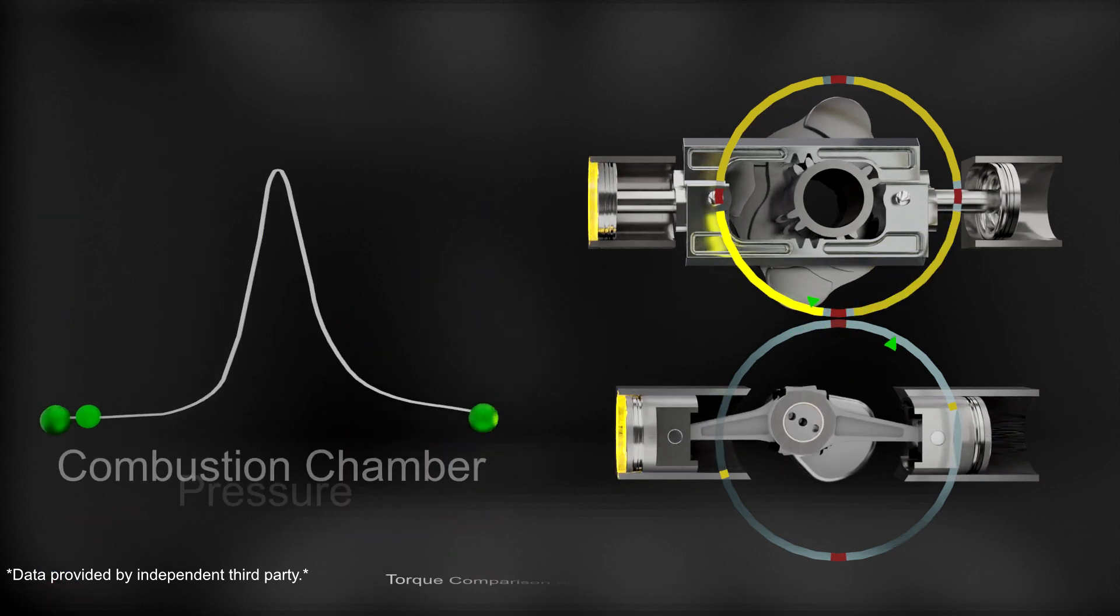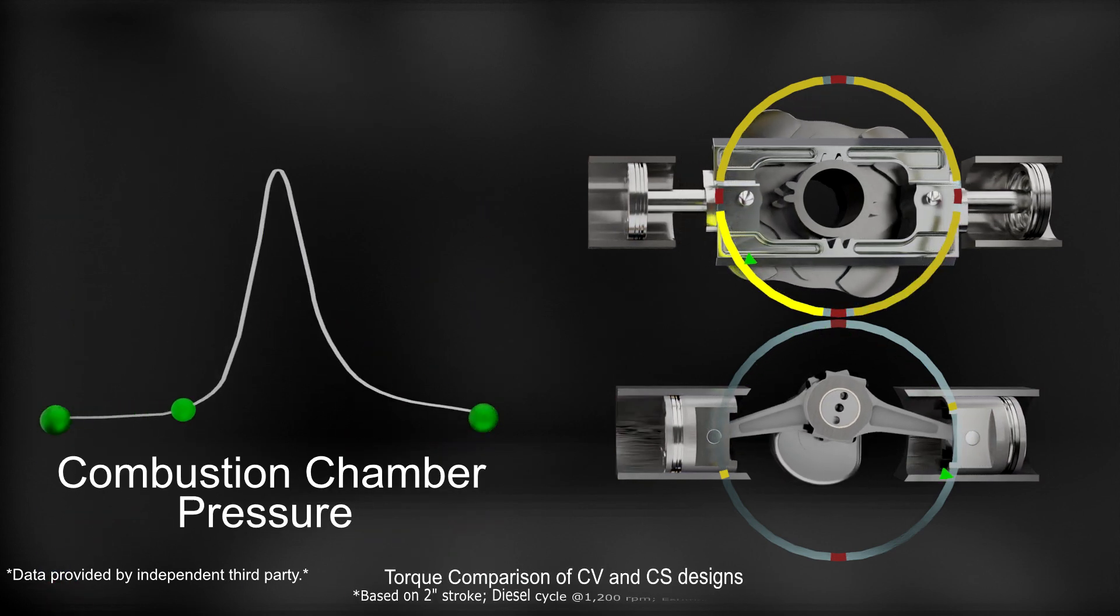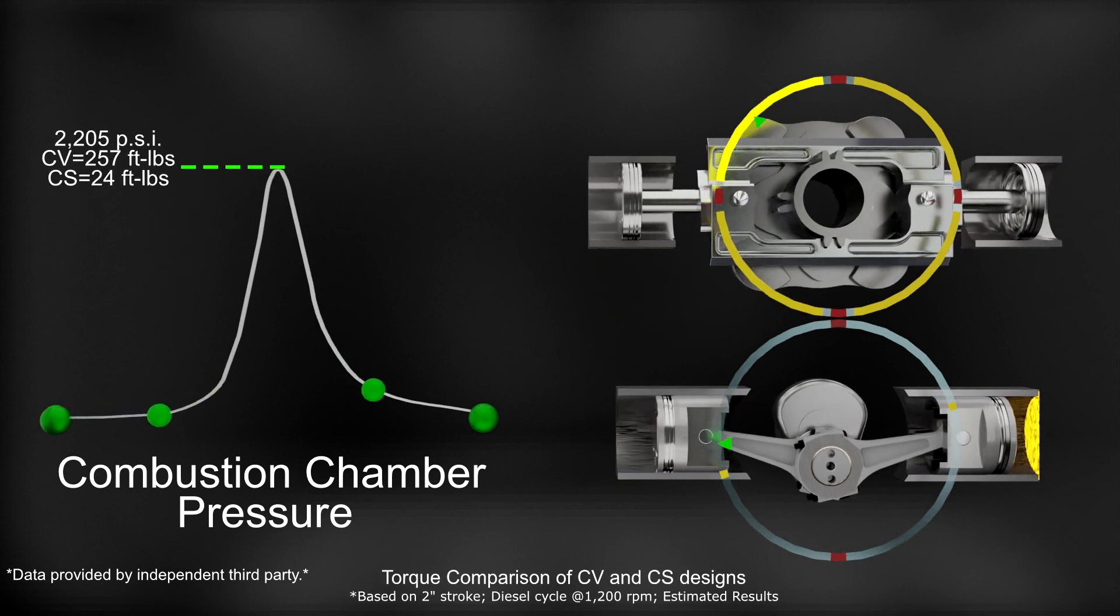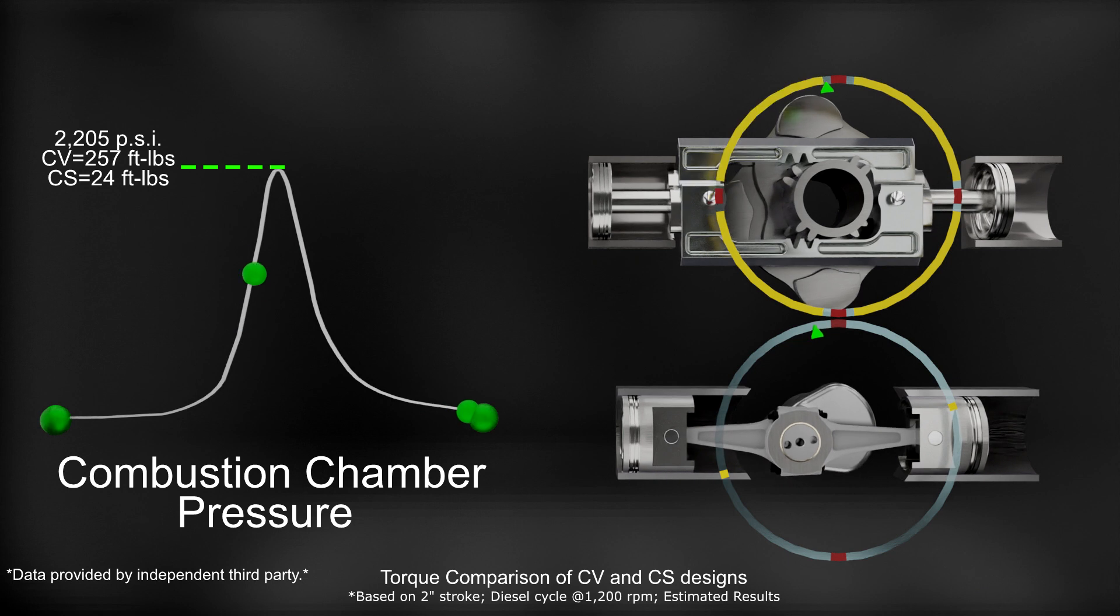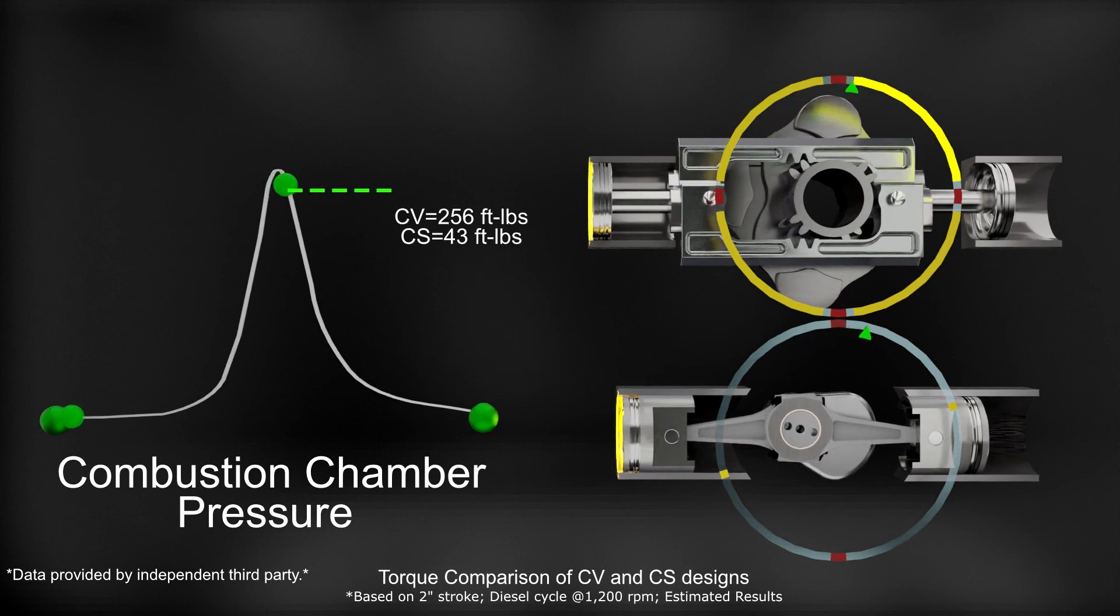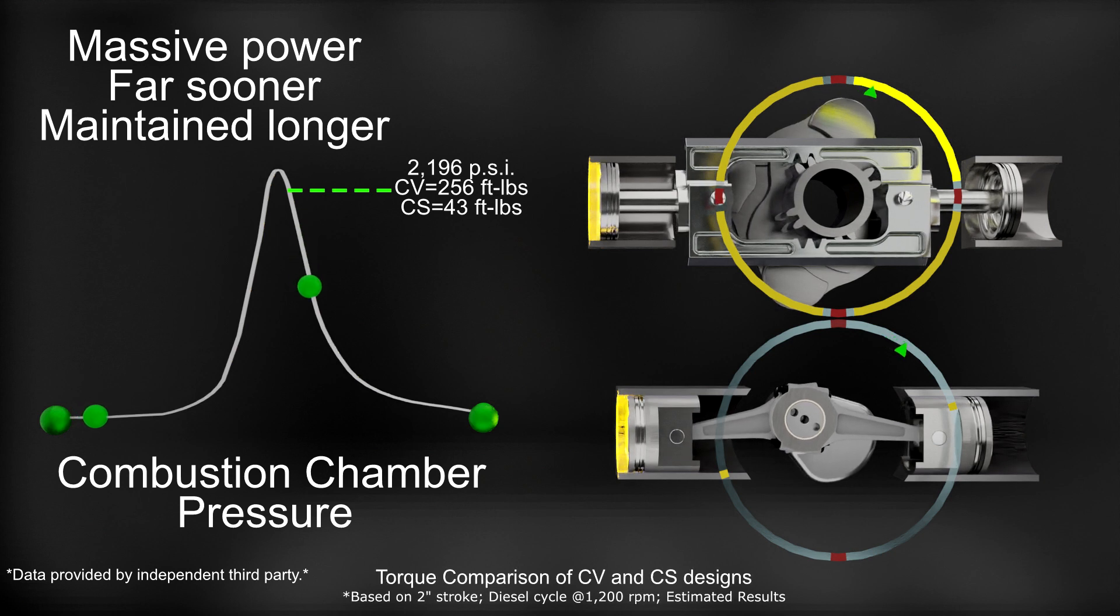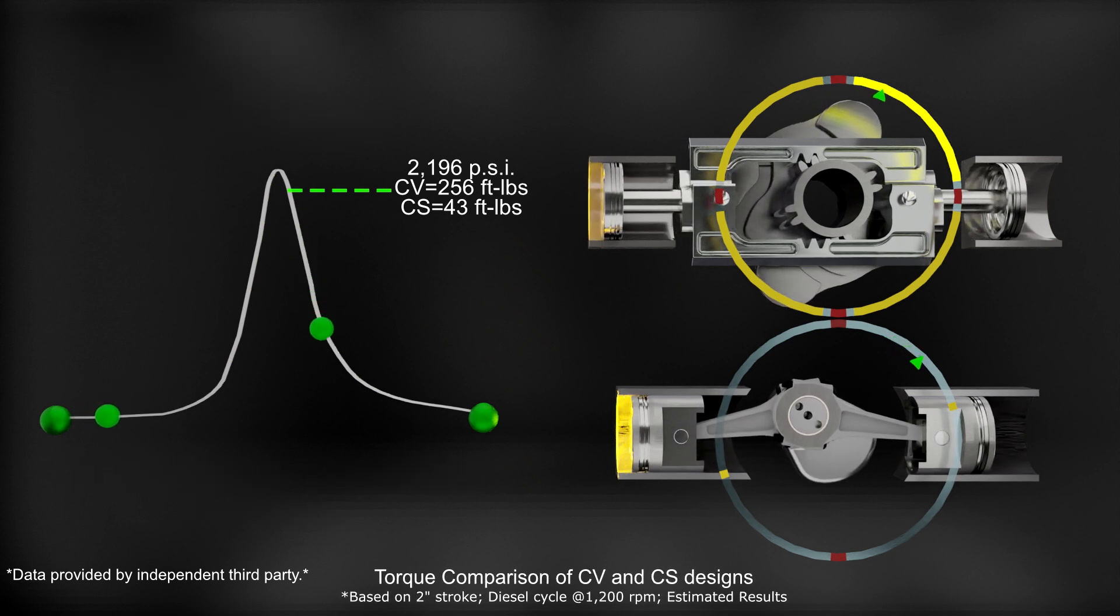Now, let's look at combustion pressure data taken from a running diesel engine. As the ignition of fuel occurs and pressure is at its highest, the CV engine will be able to transfer that energy into rotational torque just after piston TDC. The crankshaft design reaches full torque nearly halfway through the stroke, where pressure is considerably diminished.